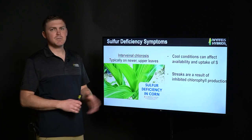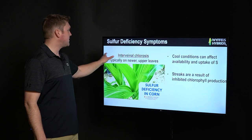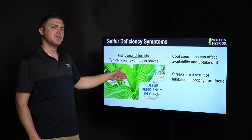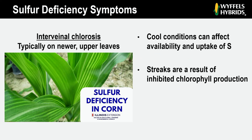Sulfur deficiency symptoms can be pretty easily defined as interveinal chlorosis, and typically you'll see that on the upper, newer growth of those leaves. I mentioned earlier that sulfur is immobile in that plant — the only way it moves up to these newer leaves is if those leaves are actively growing and actively transpiring moisture. So when we have cool conditions early, that can slow down overall plant growth, and a lot of times that's when you'll see some of these sulfur deficiencies early season. Those streaks are possibly a result of inhibited chlorophyll production, which would give it its green color, thus coming through as that bleached appearance or interveinal chlorosis.